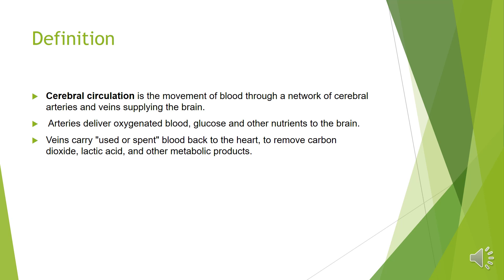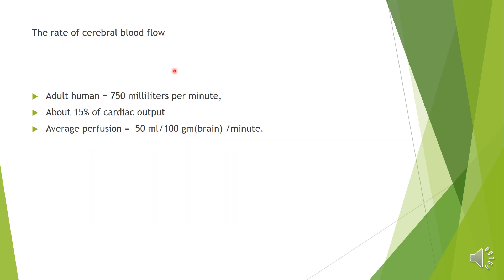Cerebral circulation consists of arteries and venous drainage. In the adult human being, the rate of cerebral blood flow is 75 ml per minute, or about 15% of cardiac output. The average perfusion is 50 ml per 100 gram of brain per minute.